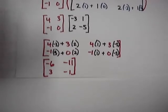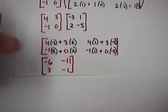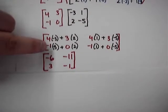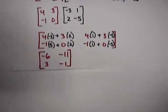4 times negative 3 is negative 12. Negative 12 plus positive 6 is negative 6. Negative 1 times negative 3 is positive 3, plus 0 is positive 3.